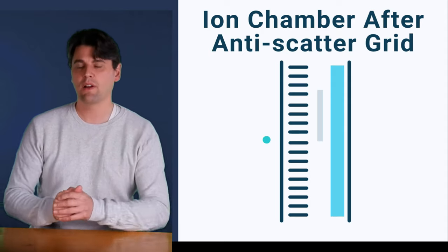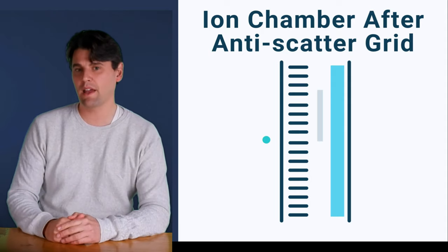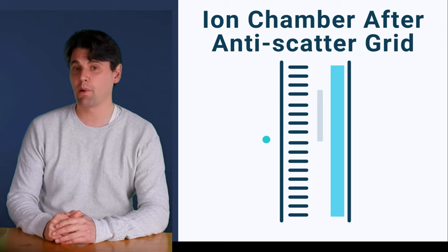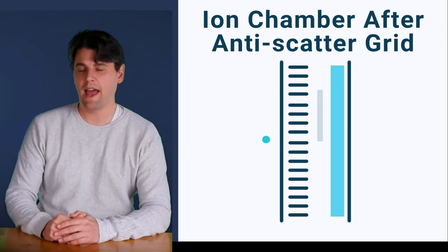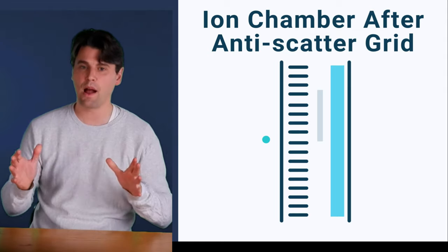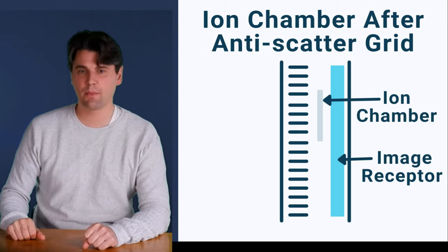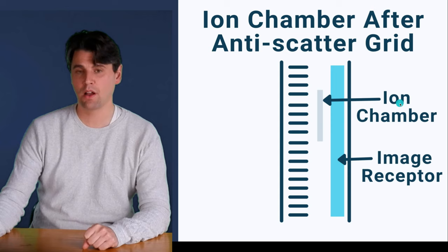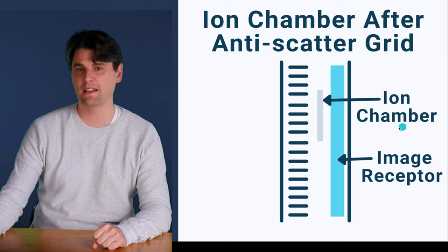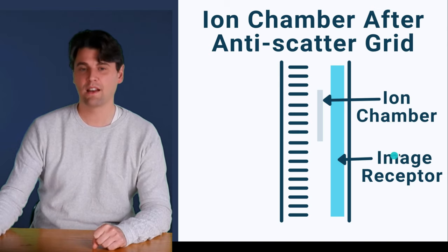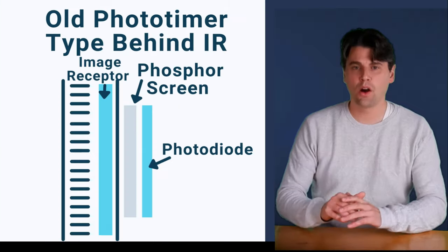If we had a more attenuating grid - which we know is based on the bucky factor - a more attenuating grid would end up not being compensated for properly. That is why we want to have our measurement or our ion chamber be as close to the image receptor as possible, so the measurement used to make the decision based on the ion chamber is very representative of what the image receptor is seeing.